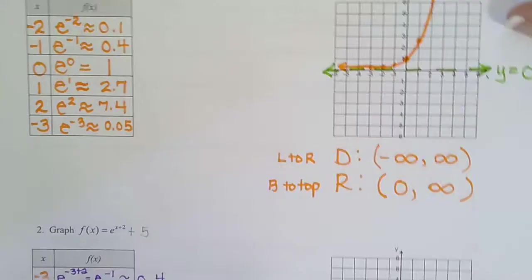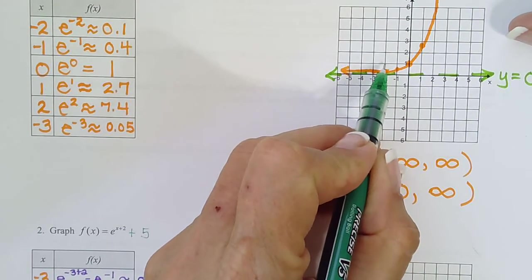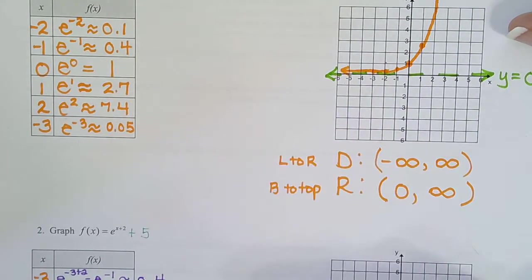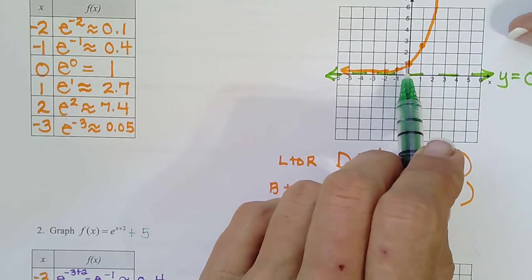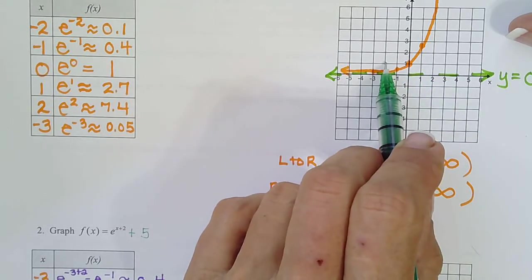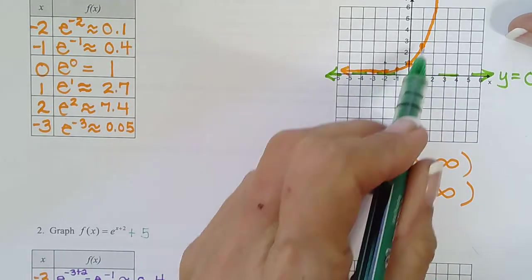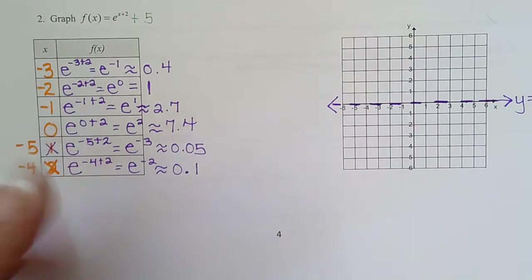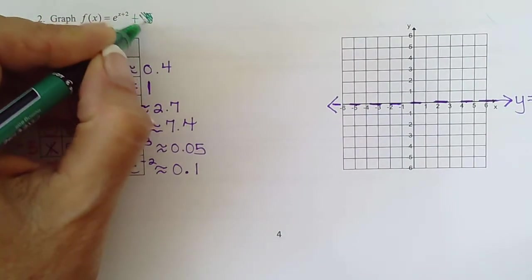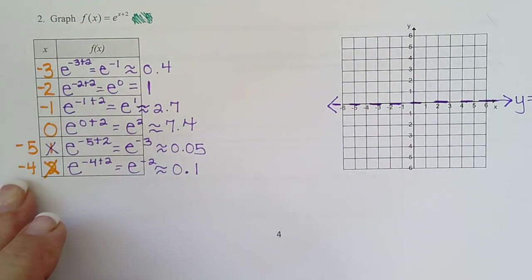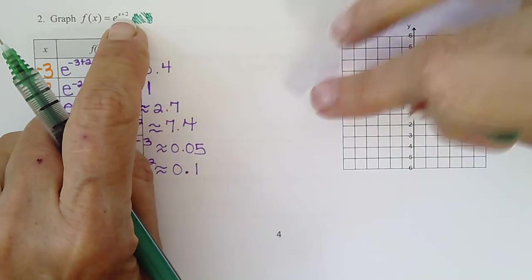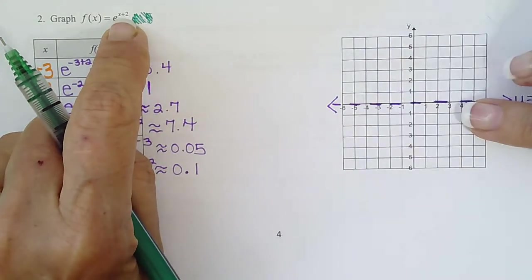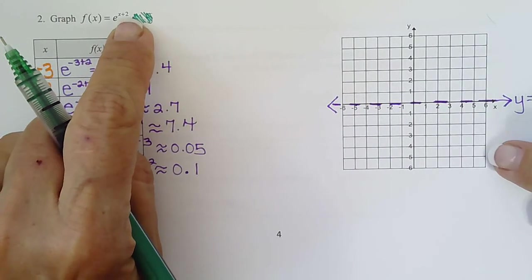If you shift this 2 to the left, that will be the graph we're going to draw right now. It's just a horizontal shift - plus 2 with the x means go left 2. If you took every point you drew on this graph and shifted it left 2, you're going to get the graph we're making now. When it's with the x, it's left and right like the x-axis, and you do the opposite. So this would be left 2.